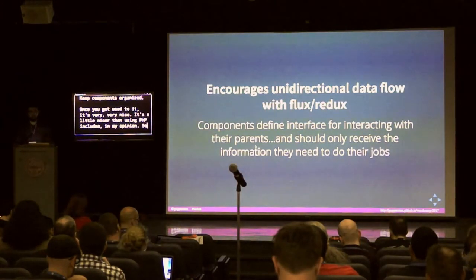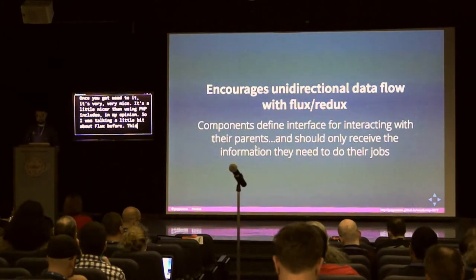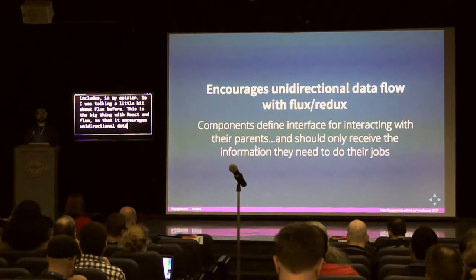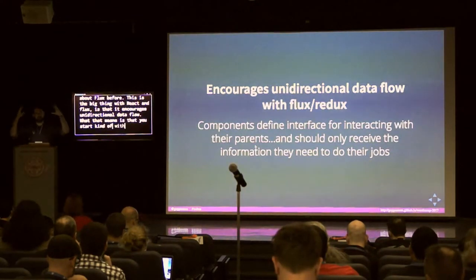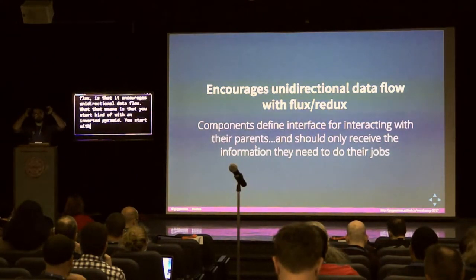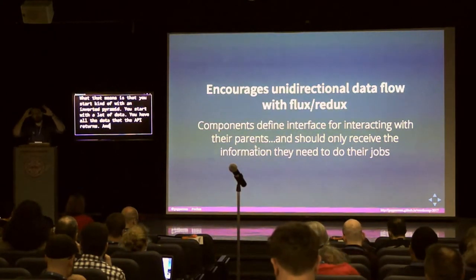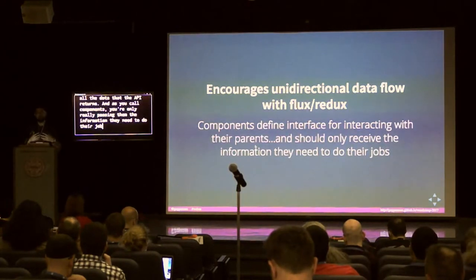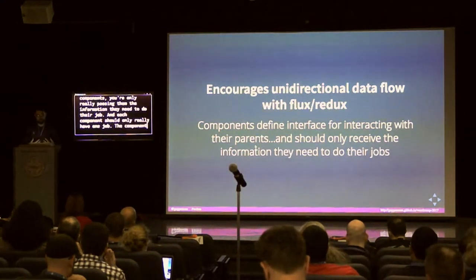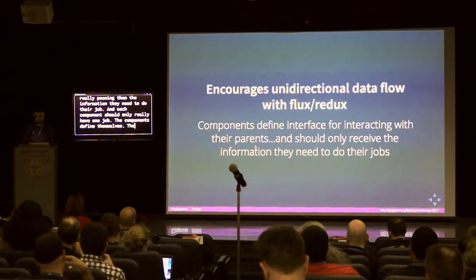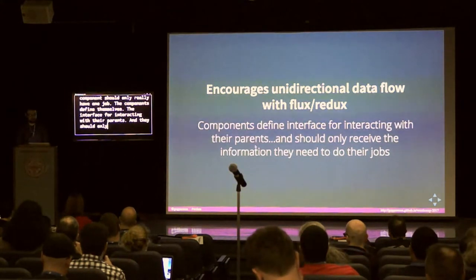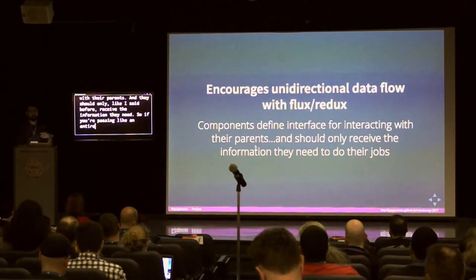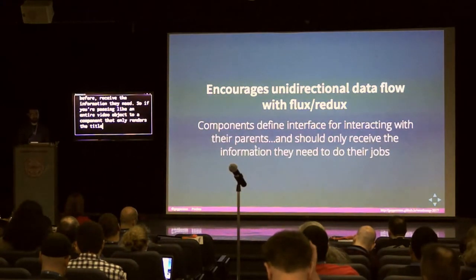Flux encourages unidirectional data flow. You start with an inverted pyramid — you have all the data the API returns, and as you call components you're only passing them the information they need to do their job. Each component should only have one job. The components define their own interface for interacting with their parents, and they should only receive the information they need. If you're passing an entire video object to a component that only renders the title, you're not really doing it right.